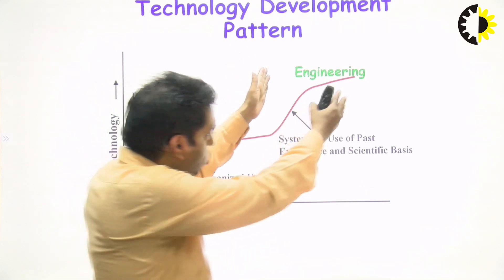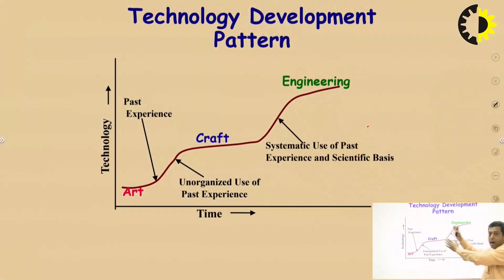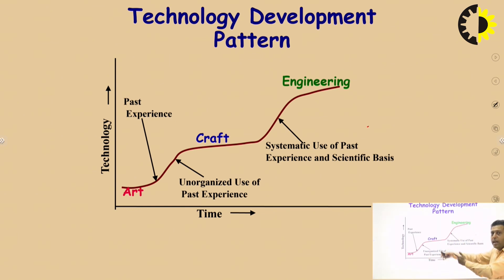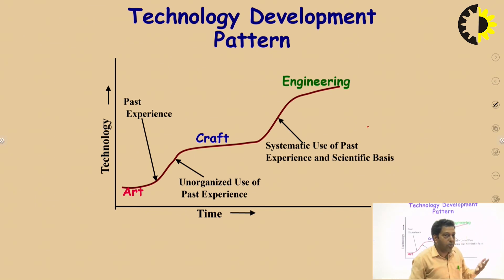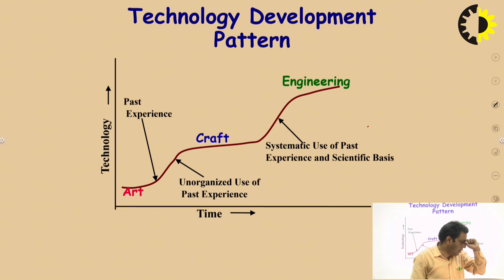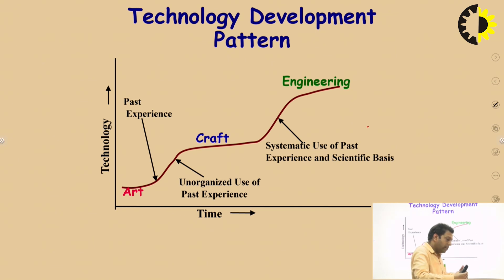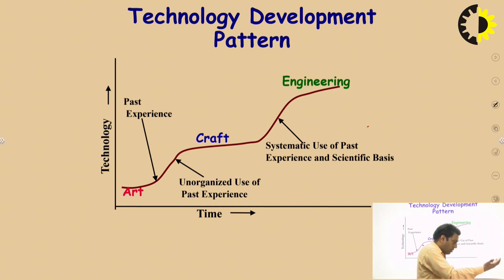The ultimate conclusion is that in today's engineering and technology, art is somewhere at the backend. India is among the world's best countries in terms of technology. These technologies and practices developed very slowly — small bits were added every day, and it took India about 70 to 75 years to reach this technical level.